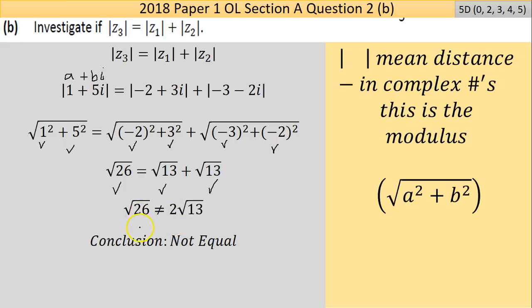Now if I add them together, that's two of them, so it's 2 times √13. Is that equal to √26? No, it's not. Now you could have went and showed the two decimal equivalents, maybe I should have. I suppose I suggest you should, just to cover your proverbial. The conclusion here is that they're not equal, and that should be the job done. 5D scale here, so a lot of chance to get marks.